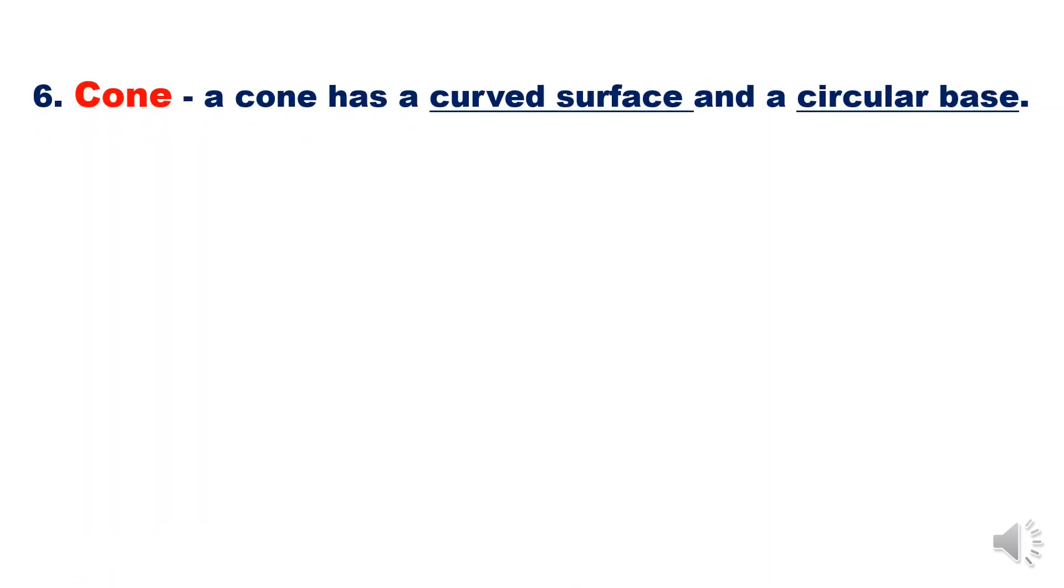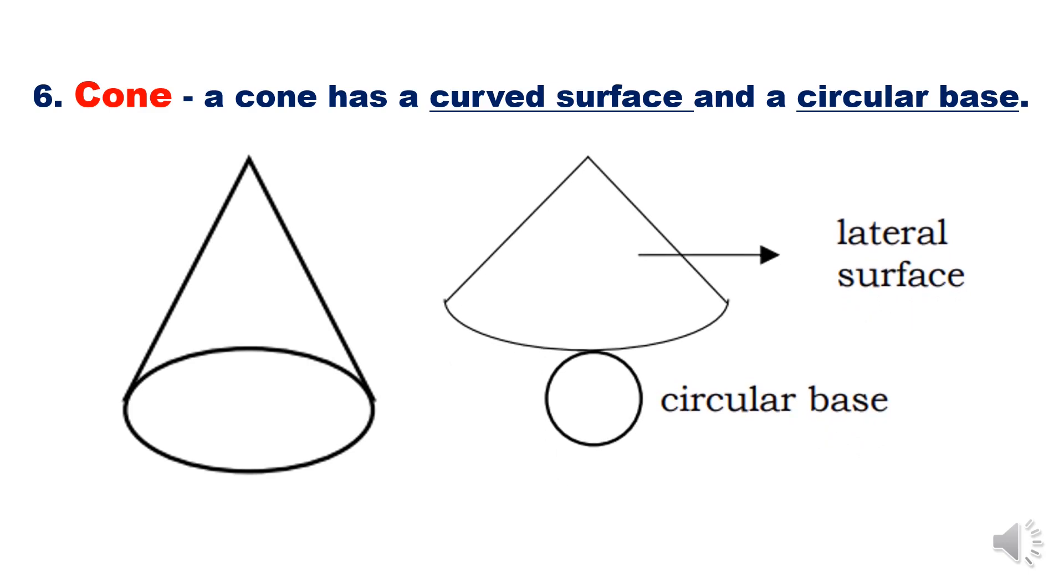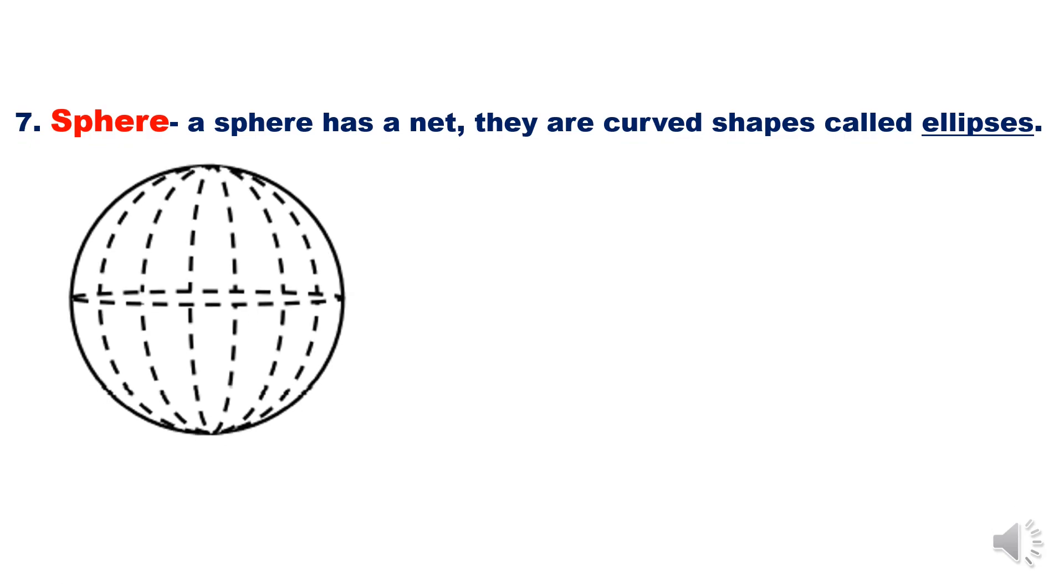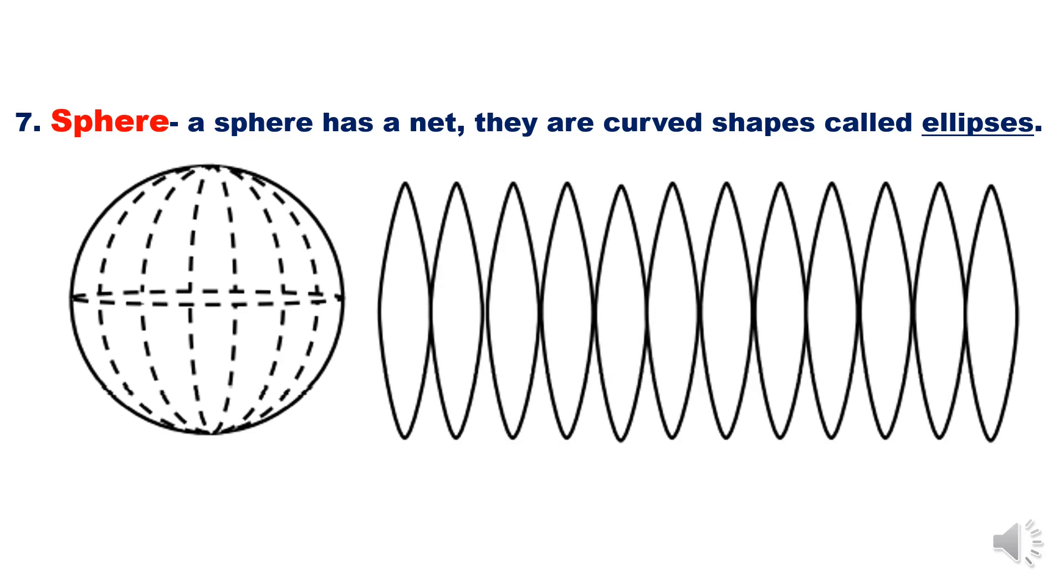Net of a cone: a cone has a curved surface and a circular base. That is the net of a cone with lateral surface and circular base. Net of a sphere: a sphere has a net. They are curved shapes called ellipses.